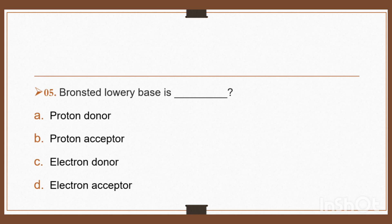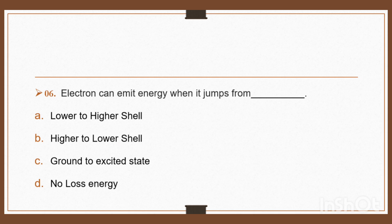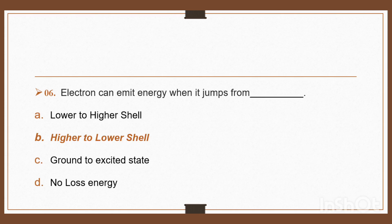Question 5: Bronsted-Lowry base is — option A: proton donor, option B: proton acceptor, option C: electron donor, option D: electron acceptor. Bronsted-Lowry base is proton acceptor. Right, option B: proton acceptor.